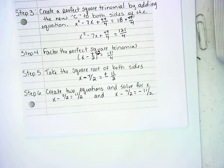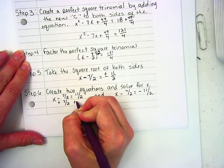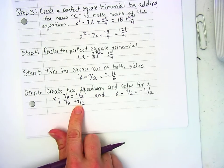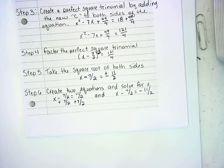One step equation. I'm going to add 7/2 to both sides. This gives me 16/2, which simplifies to 8.